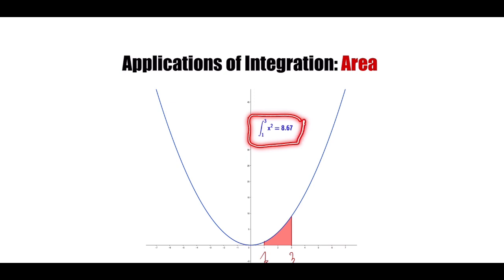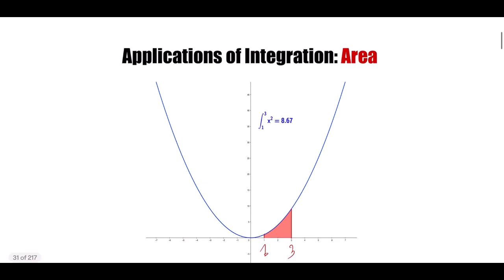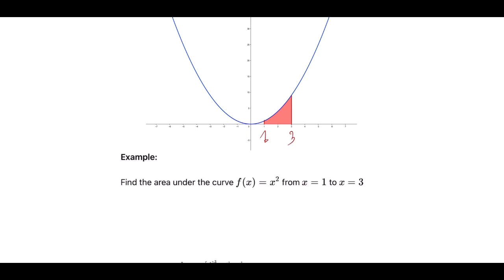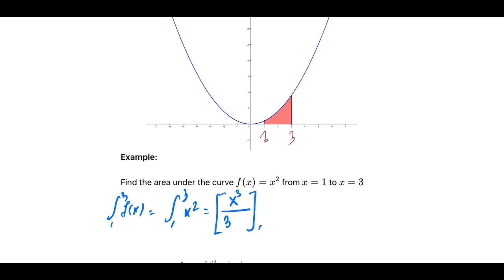We have f(x) = x², and we need the integral from x = 1 to x = 3. The integral of f(x) from 1 to 3 is the integral from 1 to 3 of x² dx. From last video, the integral follows the power rule: x to the power two plus one, divided by two plus one. So we get x³ divided by 3, evaluated between 1 and 3.